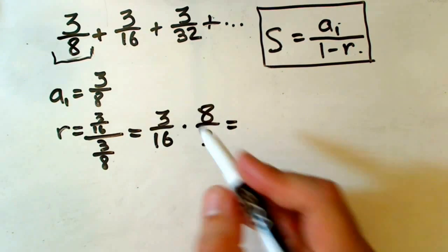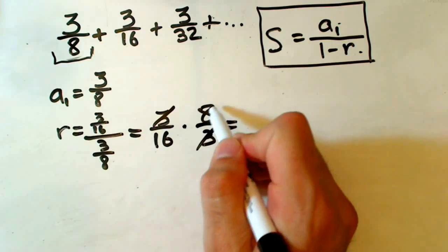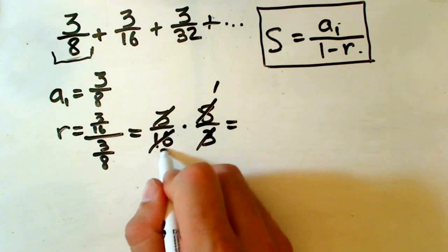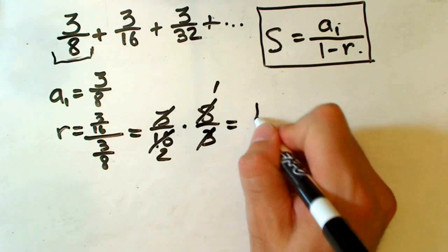We have 3 cancels, and 8, 16. 16 divided by 8 is 2, so 1 here, 2 here, and we have 1 half. This is our common ratio.